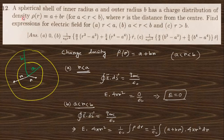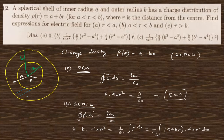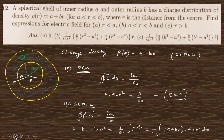Next, question 12: a spherical shell with inner radius a and outer radius b has a charge distribution of the form (a + b/r) within that region. You need to find the electric field in three regions: r less than a (region 1), a to b (region 2), and r greater than b (region 3).